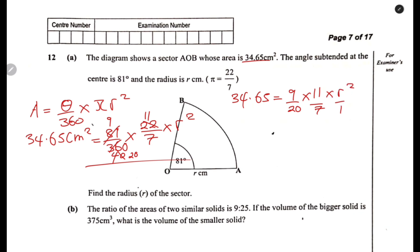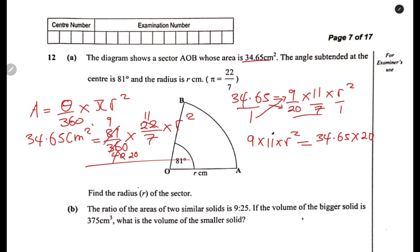Now we are going to cross-multiply — everything at the bottom multiplies across. Do not multiply the numbers together yet; leave them as they are. If you multiply them immediately you are going to complicate things, but just leave them like that and you will find something to cancel at some point. So we have 9 multiplied by 11 multiplied by R squared equals 34.65 multiplied by 20 multiplied by 7, divided by 9 multiplied by 11.